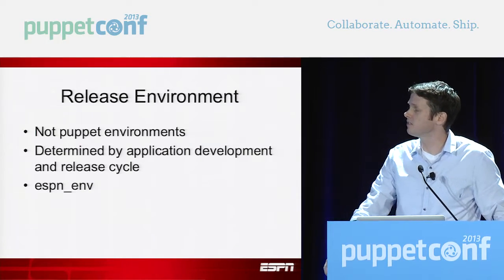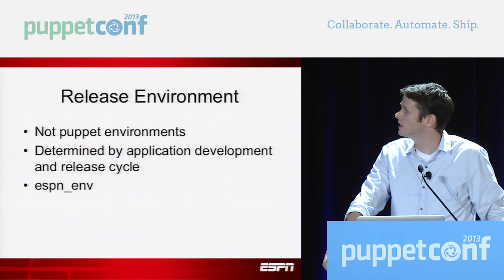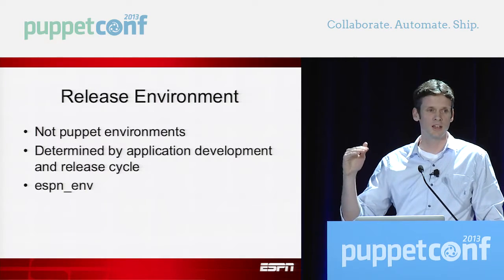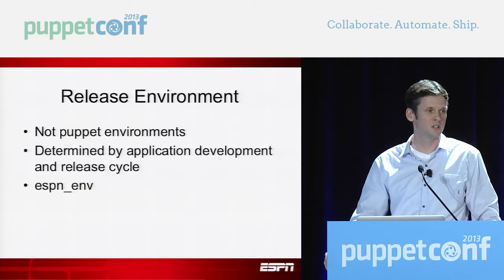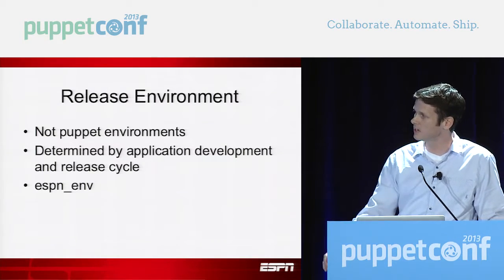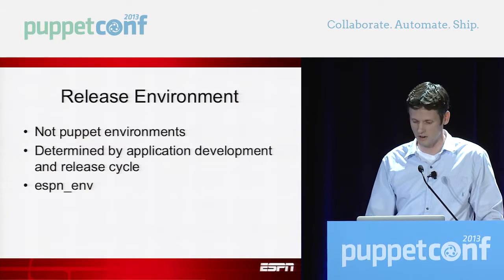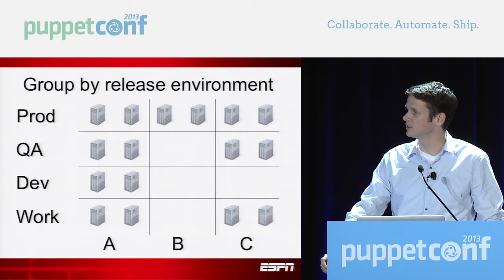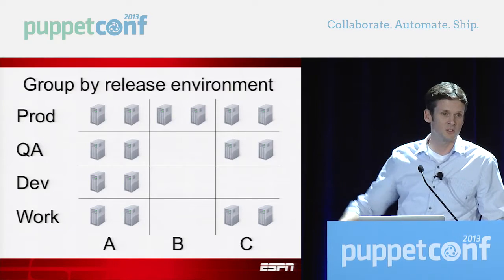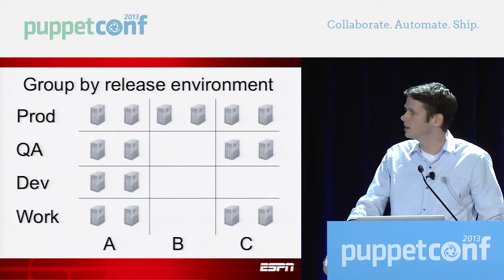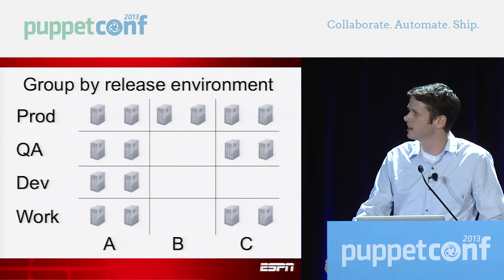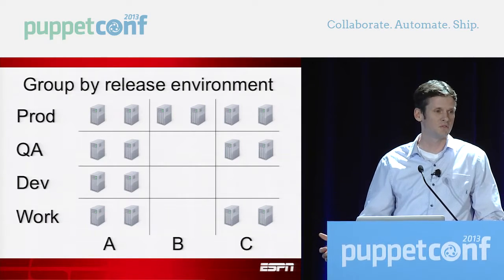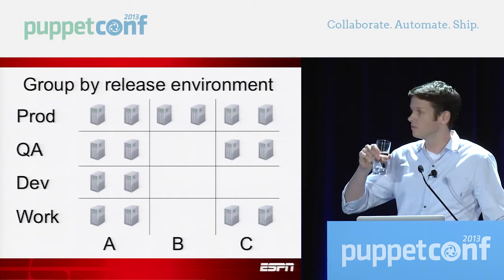Then we have our concept of release environment. These are not Puppet environments — they are determined by our application development and release lifecycle. This is your dev, QA, production, and whatever environments your business wants. The ESPN_ENV variable is what we use within our Puppet code to define those. We divide all our servers up through release environments — workstation would be VMs running on somebody's laptop or desktop, and you have dev, QA, and prod. It's all dynamic because it's just a variable, so we can assign a new environment whenever we want to create one.